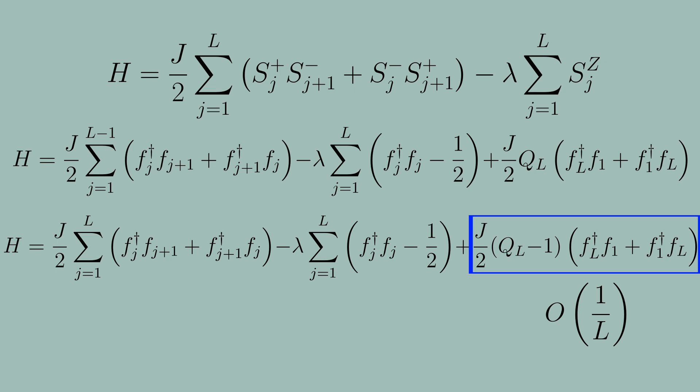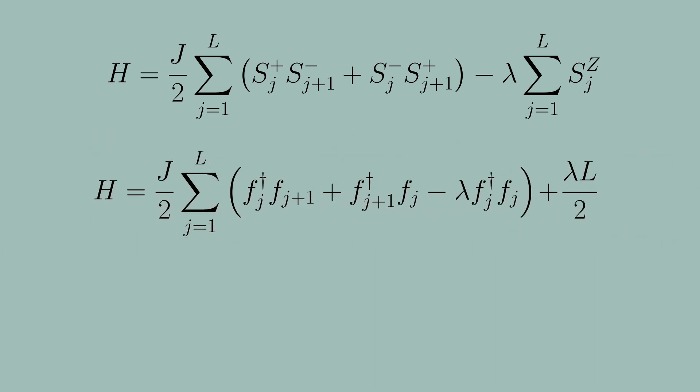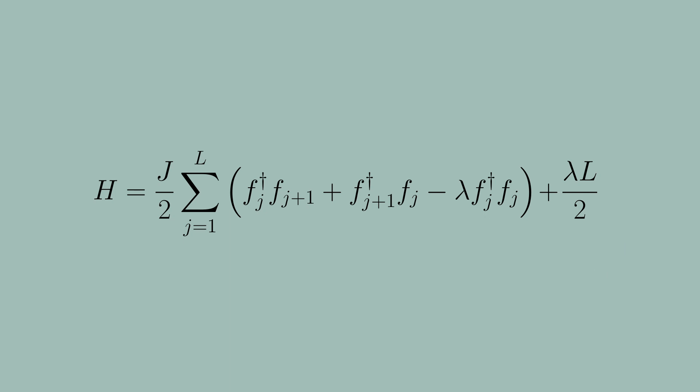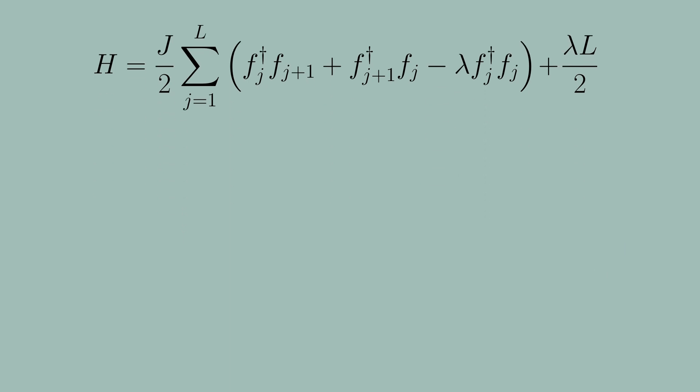This can be justified more rigorously, but for now we will simply drop this term since we will be interested in computing things in the thermodynamic limit. So our new Hamiltonian now can be written quite cleanly as the following expression where we just have fermions hopping on a periodic lattice and lambda provides a potential to that lattice. We also have a constant term here which is a surviving term from the Jordan Wigner transformation which has the spin one half z operator maps to a number operator minus one half.